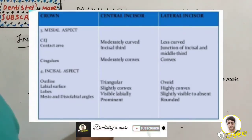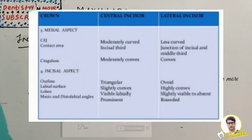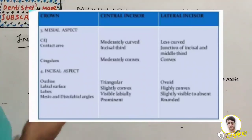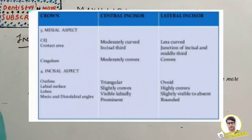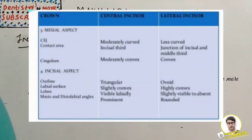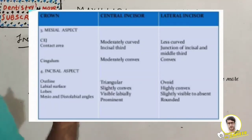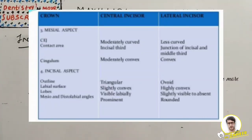The contact area is at the incisal third in the central, whereas in the lateral it is at the junction of the incisal and middle third. The cingulum is moderately convex in the central and convex in the lateral. On the incisal aspect, the outline is triangular in the central incisor but ovoid in the lateral. The labial surface is slightly convex in the central and highly convex in the lateral. The lobes are visible labially in the central but only slightly visible in the lateral. The mesio- and disto-labial angles are prominent in the central but rounded in the lateral.